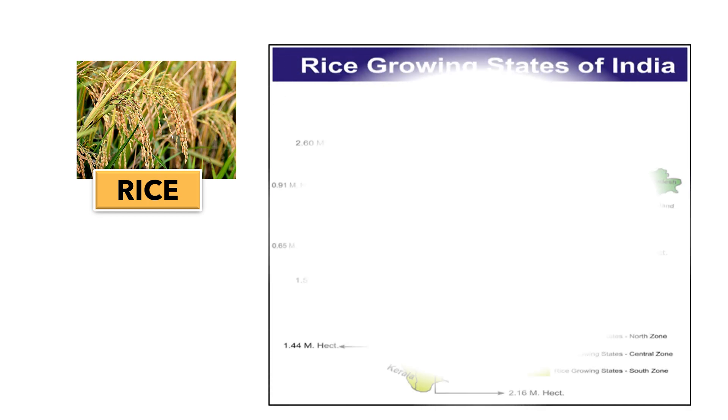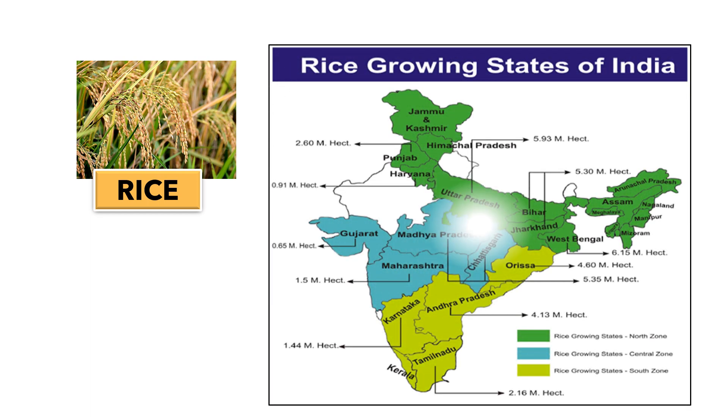Rice is the important food crop of India. It is the staple food of the people of southern and eastern India. Rice grows best in a hot and wet climate.